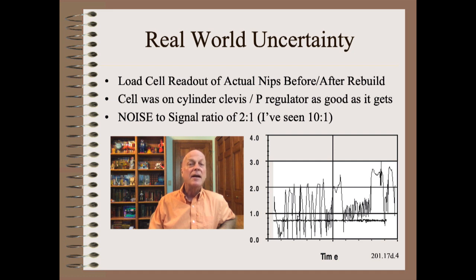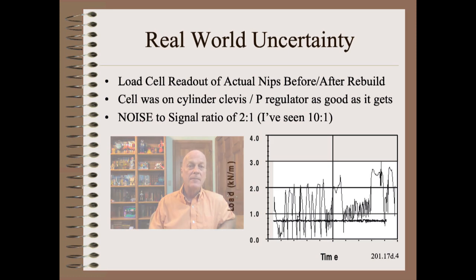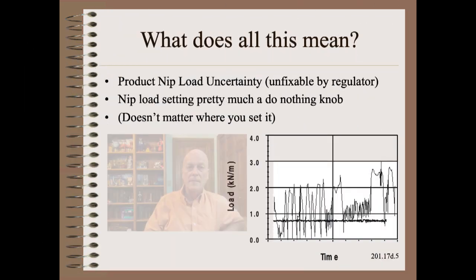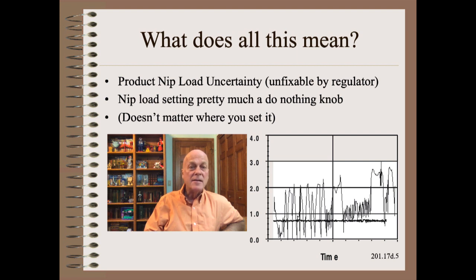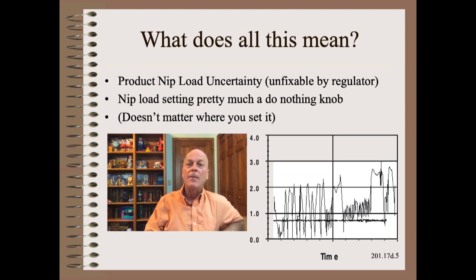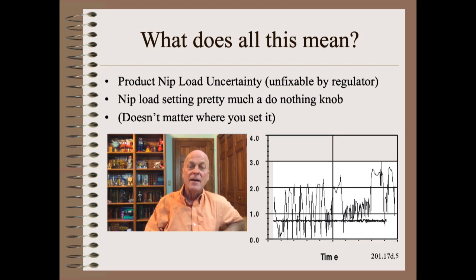However, it can get much worse. I worked on an old tissue winder where the nip load uncertainty was ten times the size of the desirable nip load. What this means is that the nip load is quite variable, and that variability is unfixable by getting a better regulator or by adding load cells, at least in the majority of cases. What this means is that the nip load setting is pretty much a do-nothing knob — it doesn't matter much where you set it. The actual nip load on the product will be all over the place.